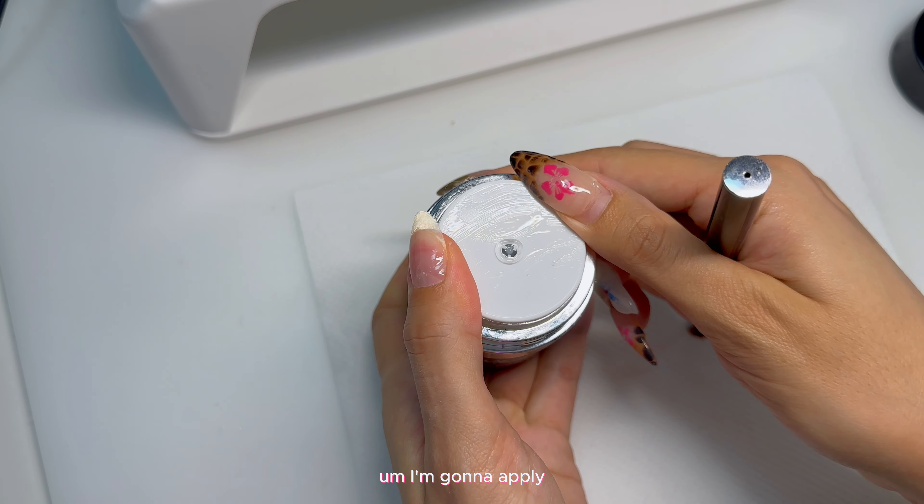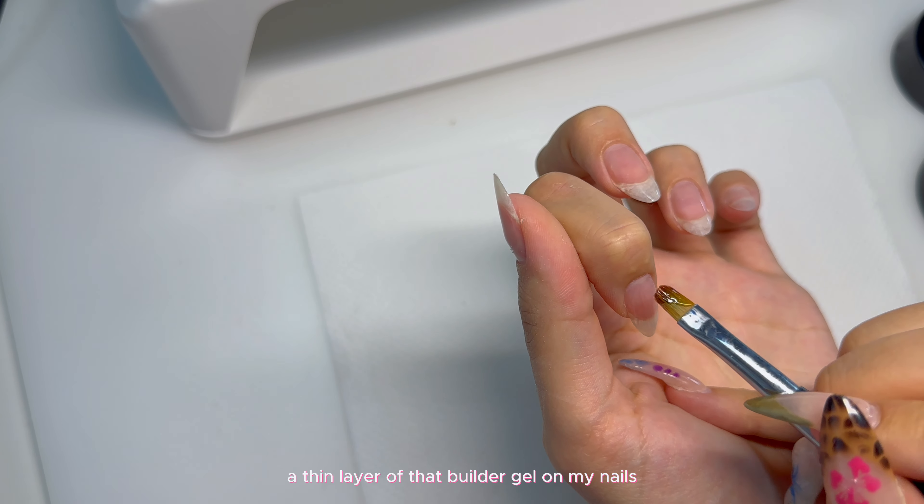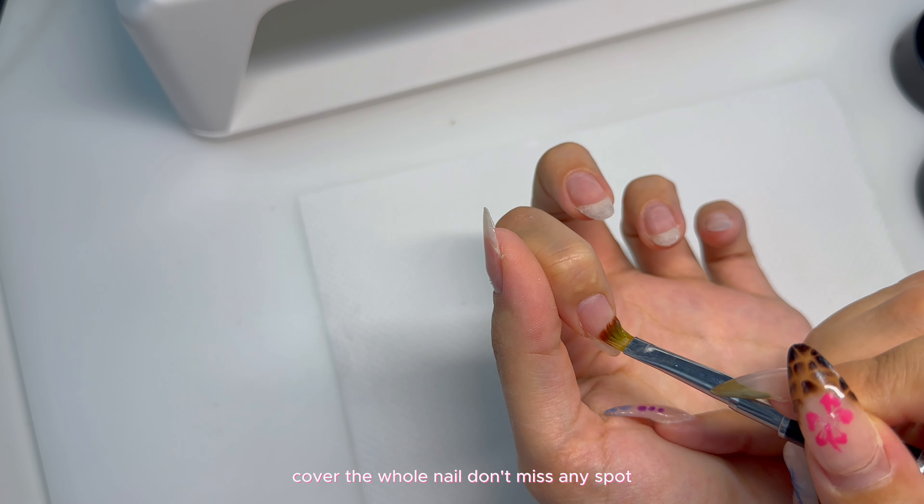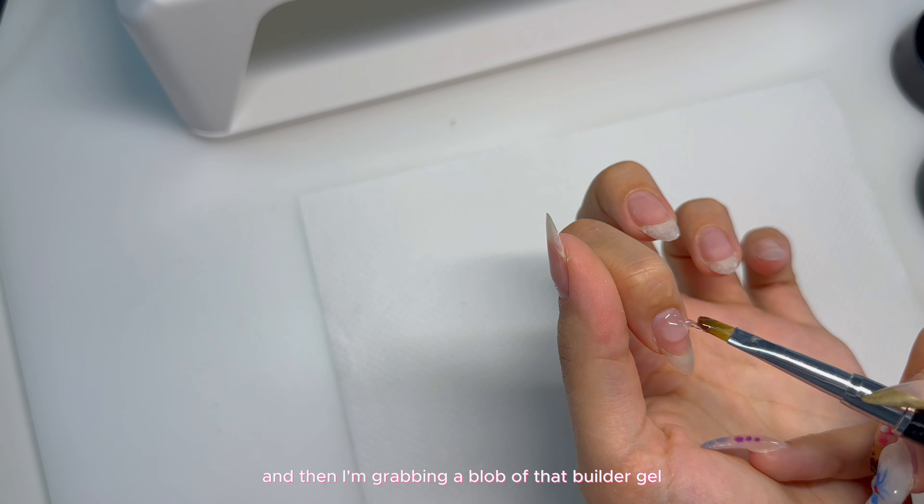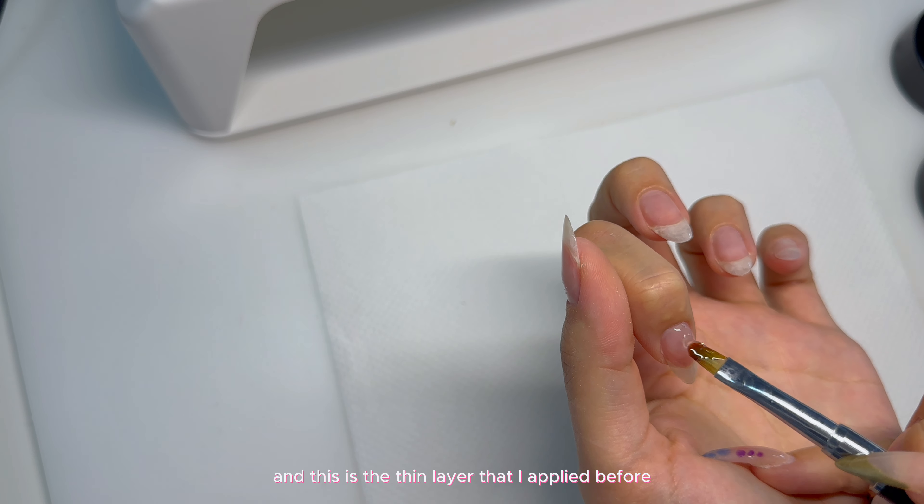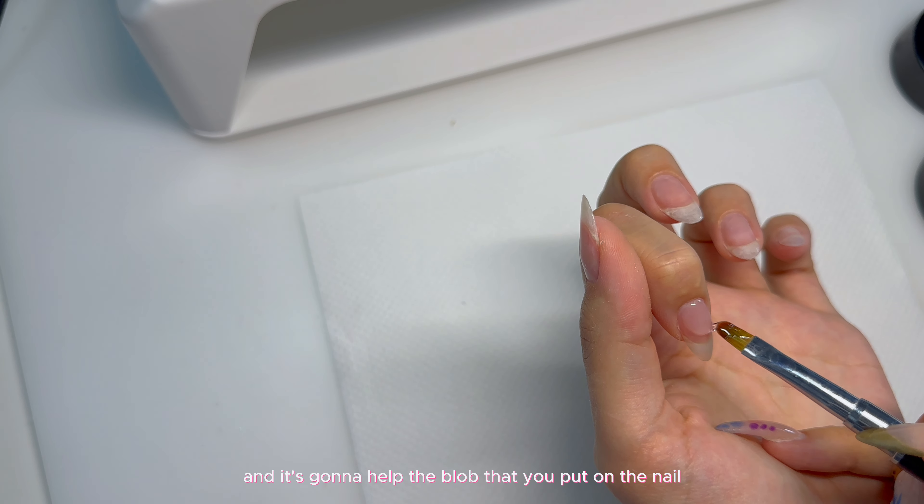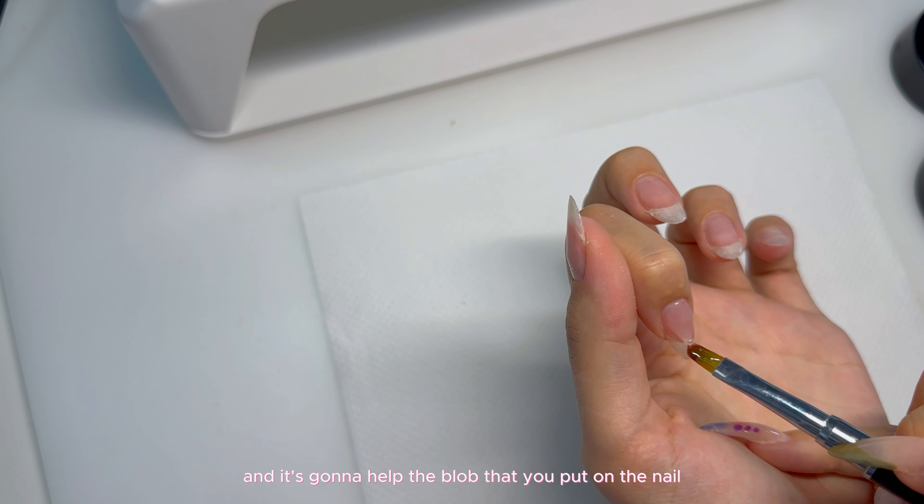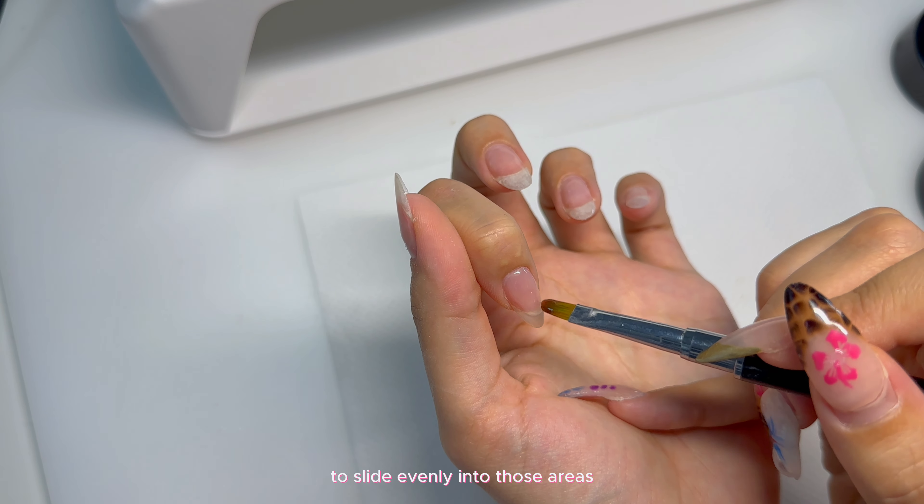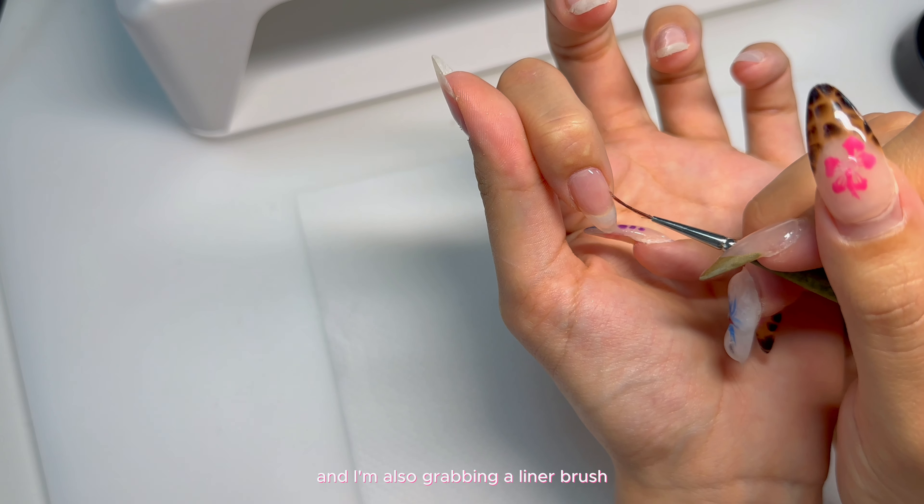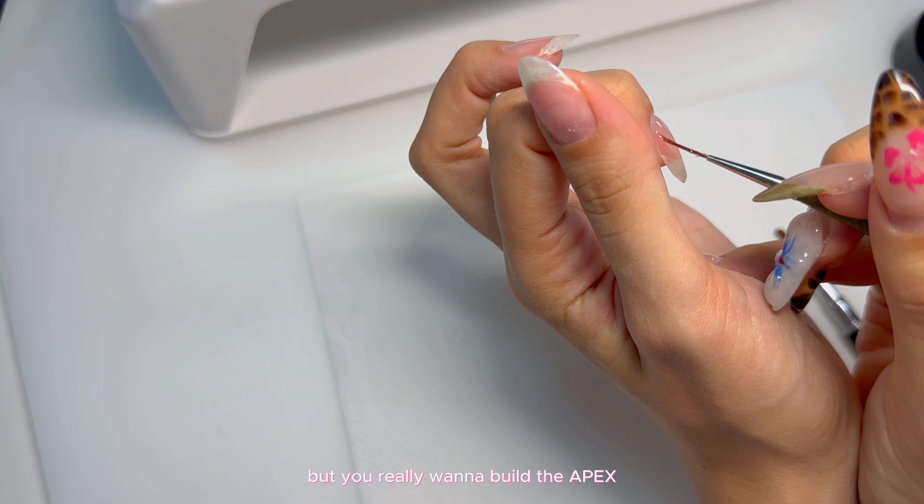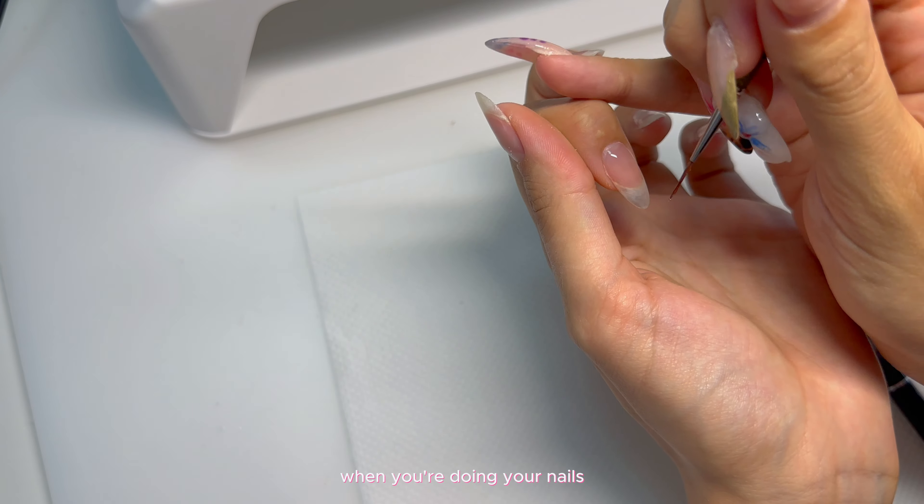Now I'm using builder gel from Savvy Land. I don't know how to say this brand, but I think it's Savvy Land. I'm going to apply a thin layer of that builder gel on my nails. Cover the whole nail, don't miss any spot. And then I'm grabbing a blob of that builder gel. This thin layer that I applied before the blob is called the slip layer, and it's going to help the blob that you put on the nail to slide evenly into those areas.